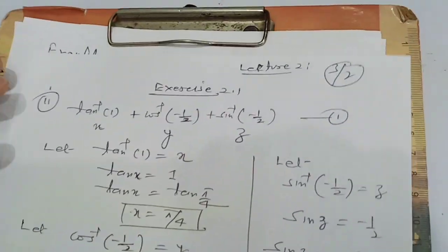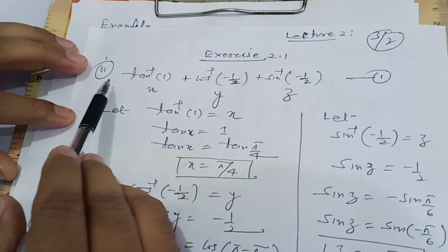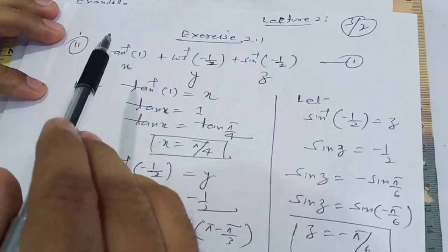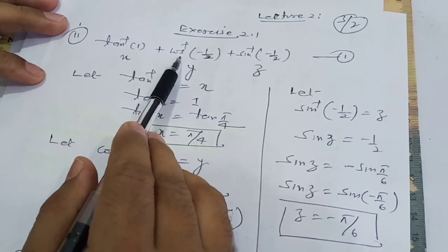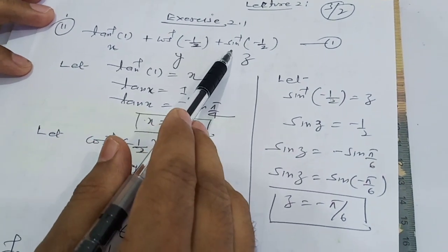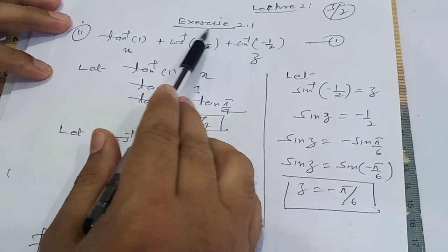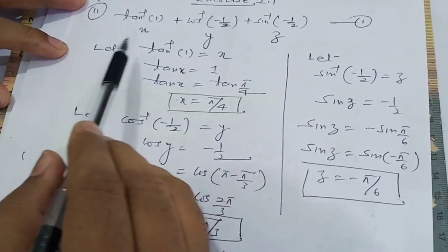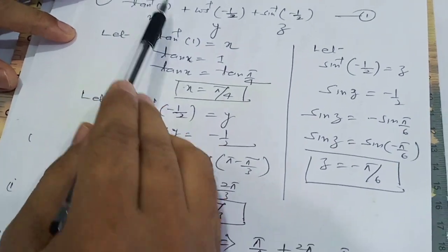Now I am first taking up the doubts from previous classes asked by some students. The question is number 11 from exercise 2.1: evaluate tan⁻¹(1) + cos⁻¹(-1/2) + sin⁻¹(-1/2). To find the value, let tan⁻¹(1) = x.